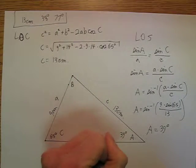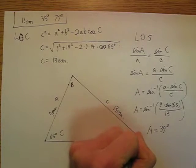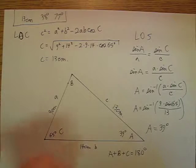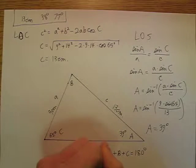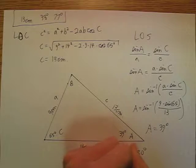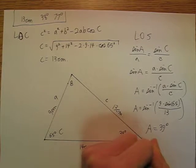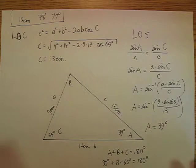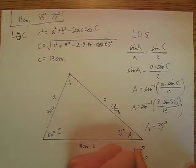And then how do we find B? Well, we know that A plus B plus C equals 180 degrees. So we know that 39 degrees plus B plus 65 degrees equals 180. And that, of course, is going to mean that B is going to be 76 degrees.